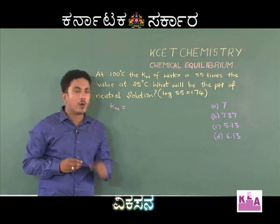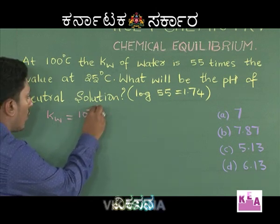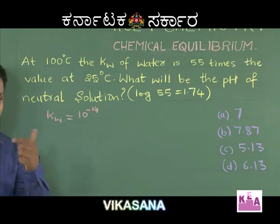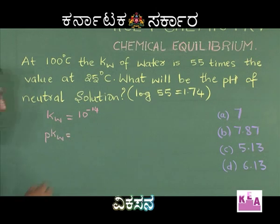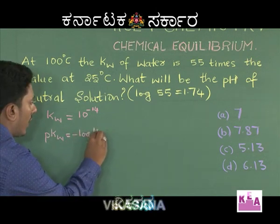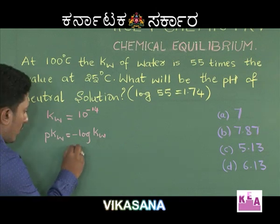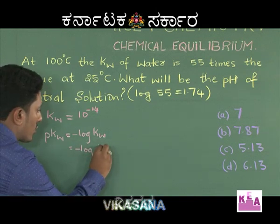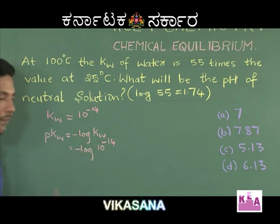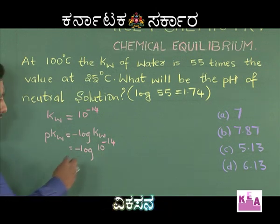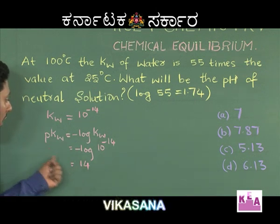At 25 degrees Celsius, the ionic product of water Kw is equal to 10 raised to minus 14. We define a quantity called pKw, given by the expression pKw = −log(Kw) = −log(10⁻¹⁴). Using log(aˣ) = x·log(a), this becomes −(−14)·log(10) = 14, since log(10) = 1. Hence pKw = 14 at 25 degrees Celsius.